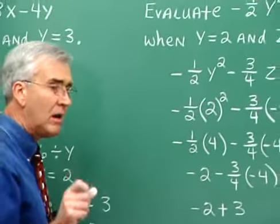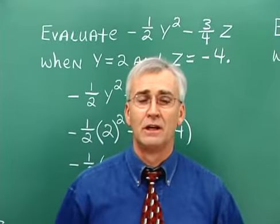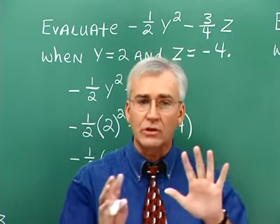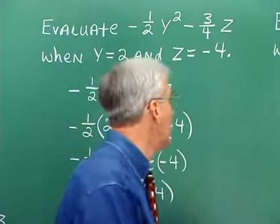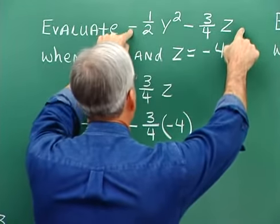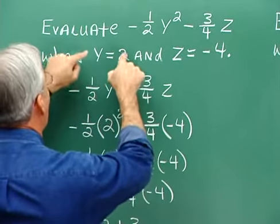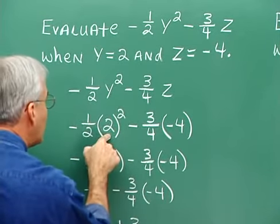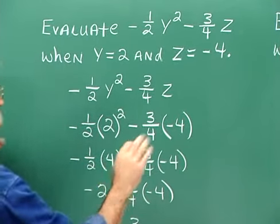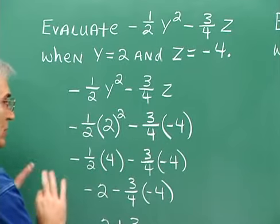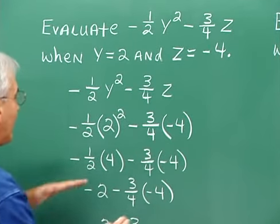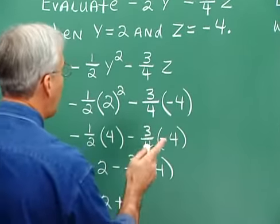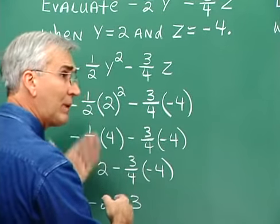Here's another one. No matter how complicated they get, we follow the same procedure — we write down the expression, and in the next step, we replace letters with numbers. Then we just follow our nose through it according to the operations that are indicated. We want to evaluate this expression when y is 2 and z is negative 4. So we replace y with 2 and z with negative 4. Notice how everything else stays exactly the same. It's just a blind replacement situation, and in that circumstance, we often have to introduce parentheses to contain the number that replaces the letter.